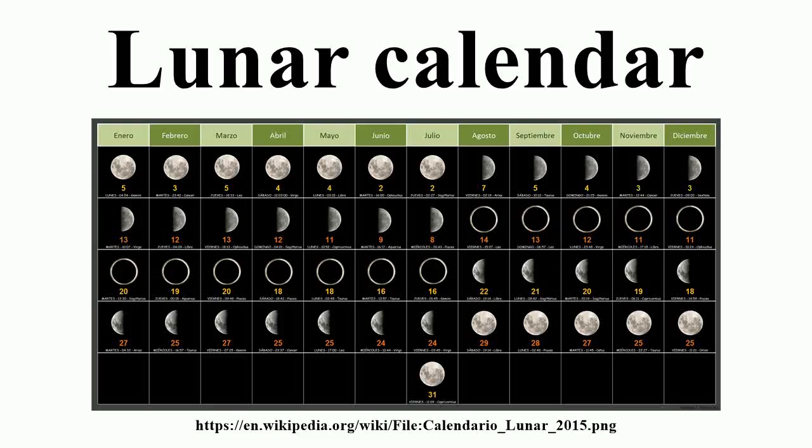A lunar calendar is a calendar that is based on cycles of the lunar phases. This can be contrasted with the Gregorian calendar, which is a solar calendar based on the revolution of the Earth around the Sun. Because there are slightly more than 12 lunations in a solar year, the period of 12 lunar months is sometimes referred to as a lunar year.